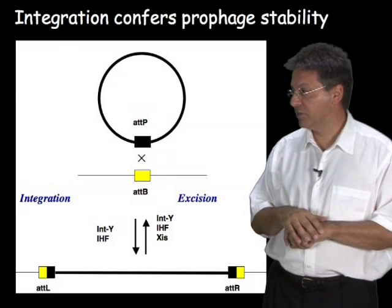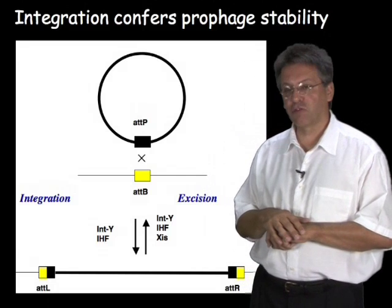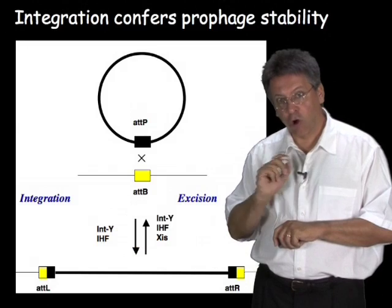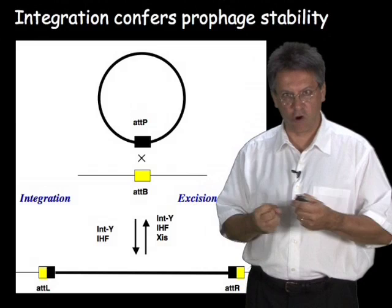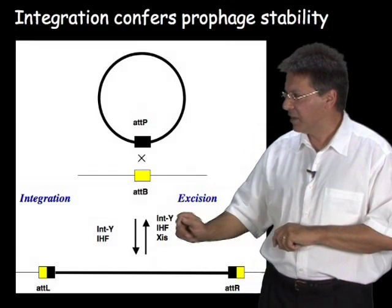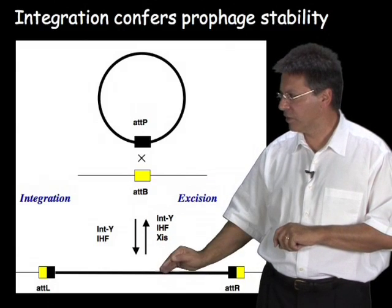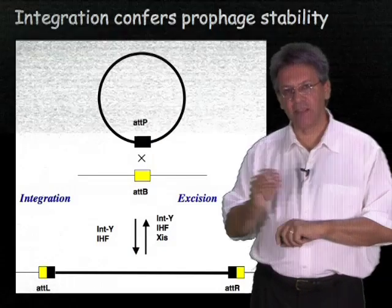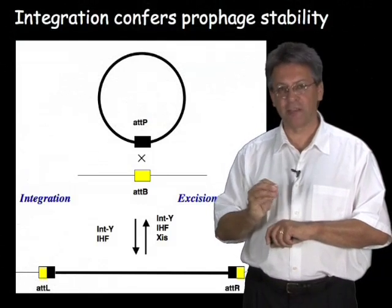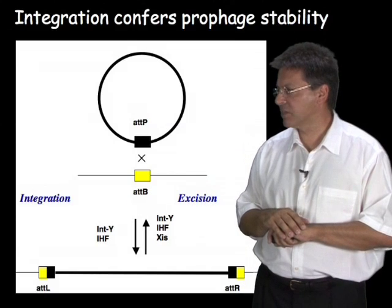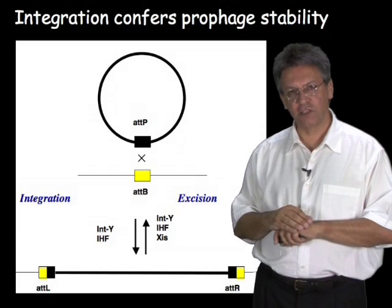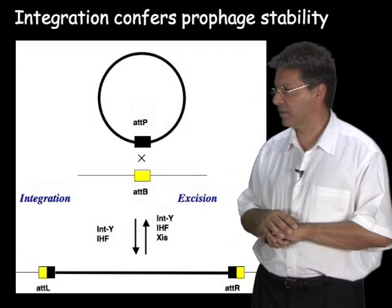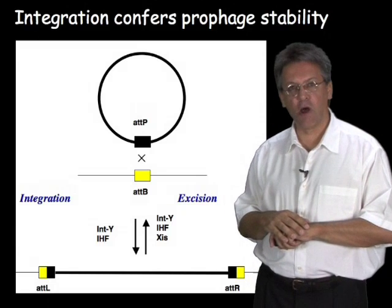This reaction also commonly uses host functions. Integrase works together with a bacterial protein called integration host factor, or IHF. Since lysogens can undergo spontaneous or induced induction into lytic growth, there has to be a biological reversal of this reaction. That process is called excision, and is again catalyzed by integrase. There is a second phage-encoded protein called excise, or XIS for short, which determines the directionality of these reactions. In the absence of excise, you get integration. In the presence of excise, integrase can only perform the excision reaction.